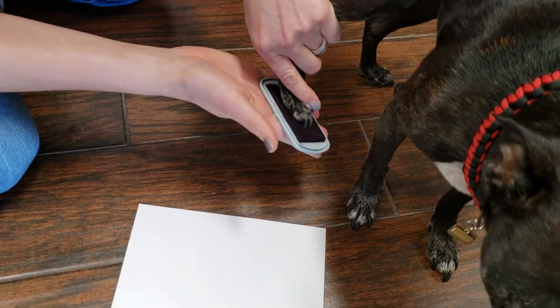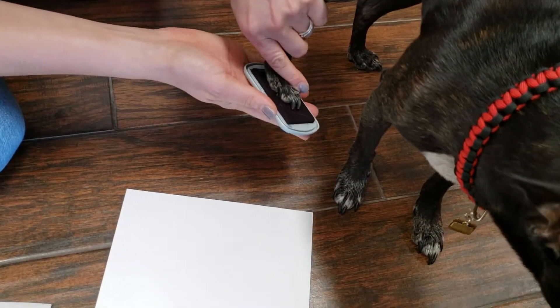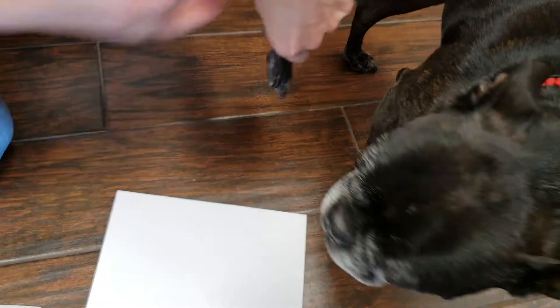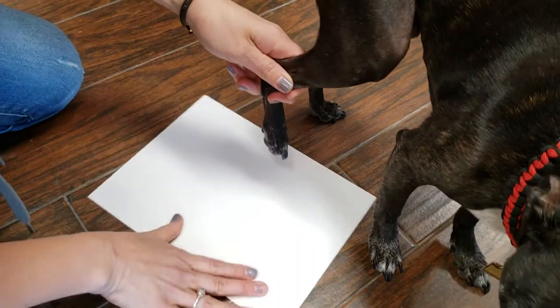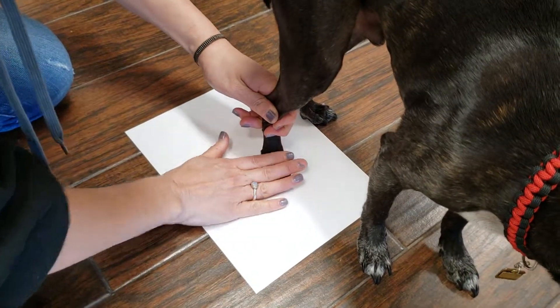Put their paw on it, press kind of hard, and then slide the paper underneath into position and let them put their weight on it. Then pull off.